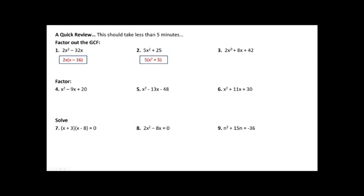This third one is a quadratic trinomial — three terms. I have to find something that can divide into all three. The 2, the 8, and the 42 can all be divided by 2. X squared and x can be divided by x, but this last constant cannot, so I cannot divide away an x. When I pull out the 2: 2 times x squared gives 2x squared, 2 times 4x gives 8x, and 2 times 21 gives 42. If that was difficult, you'll want to jump back to video 63 in this series on solving polynomial equations.